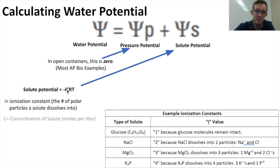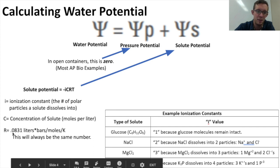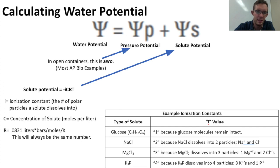The C, meanwhile, stands for the concentration of the solute. That's the moles per liter. R stands for a constant, which for the AP bio test will always be 0.0831. And then the T stands for temperature in Kelvin. To calculate the temperature in Kelvin, you take whatever the temperature was in Celsius and you add 273 to it.